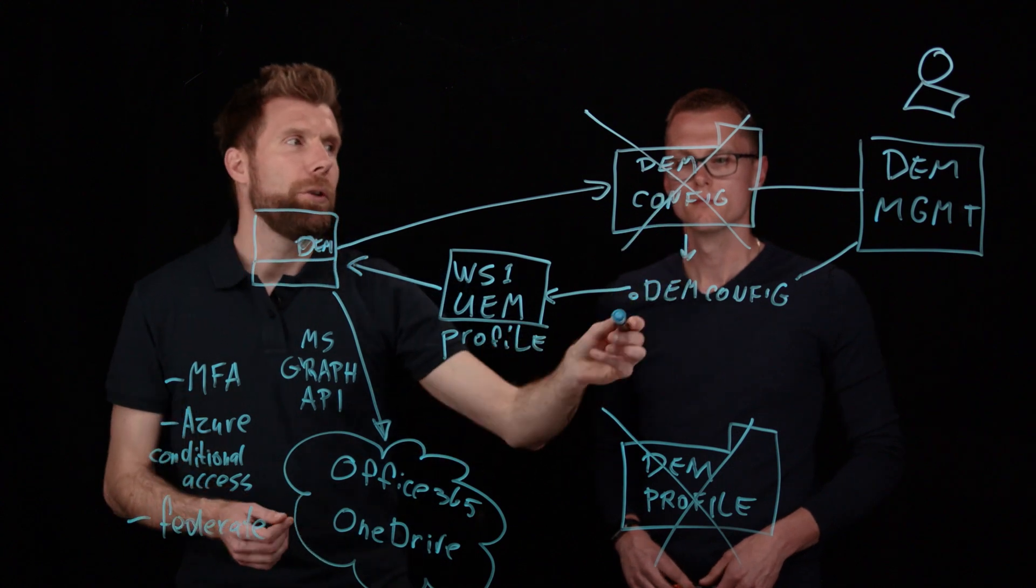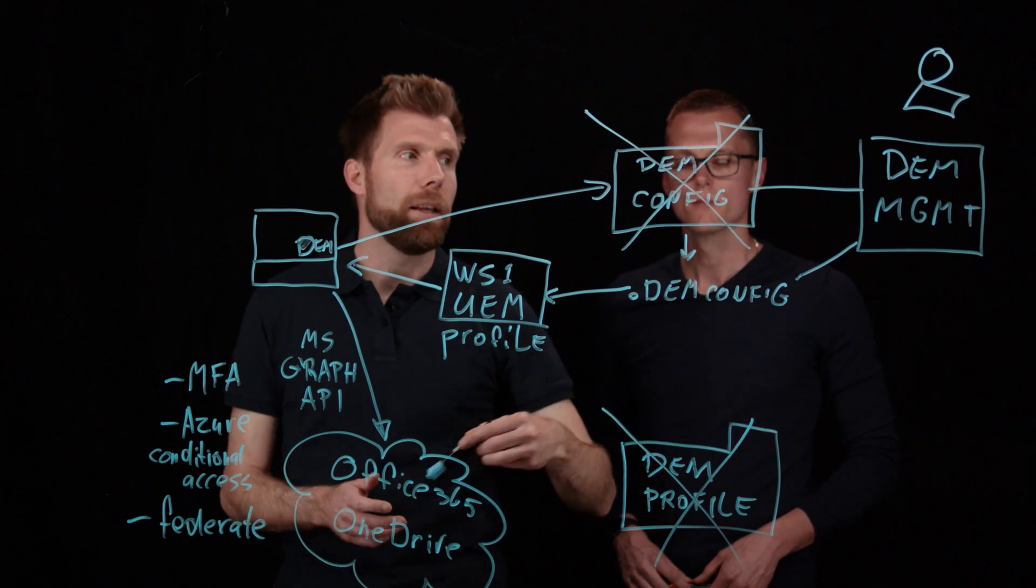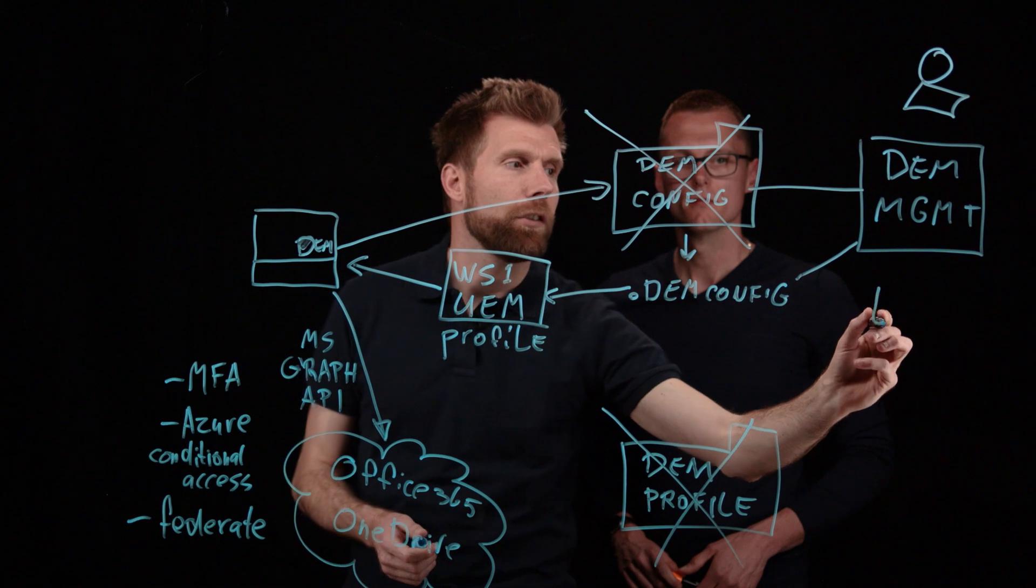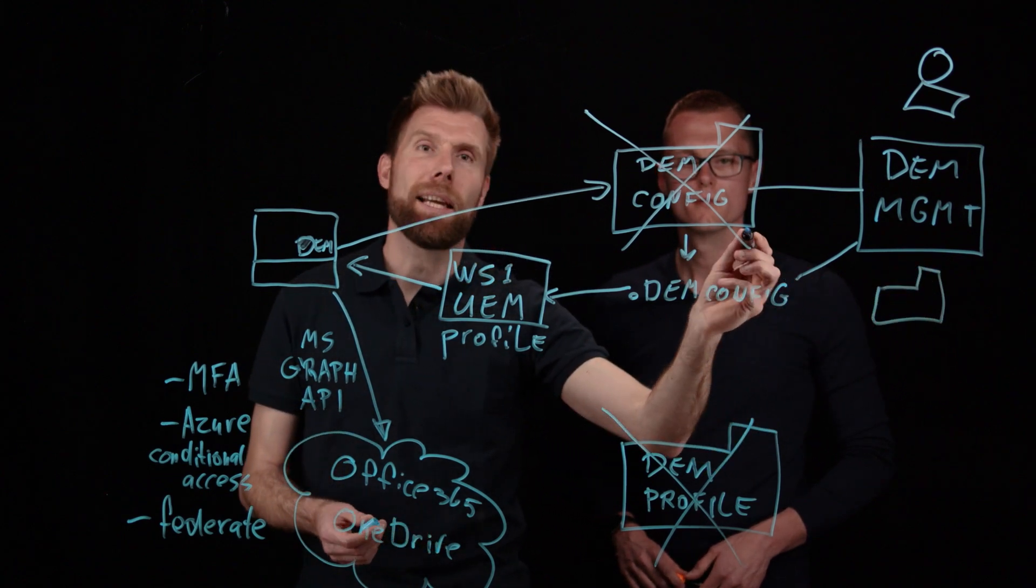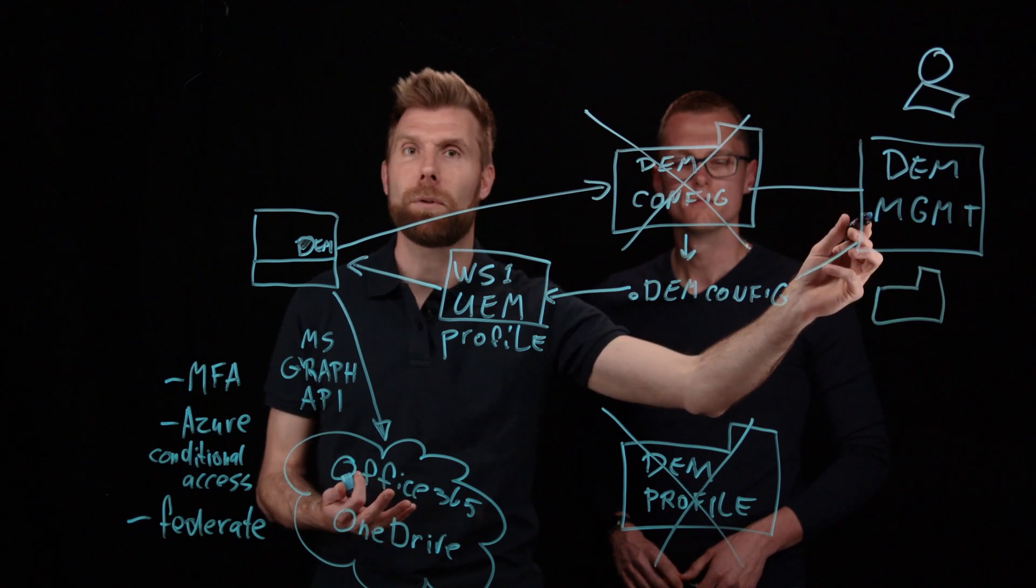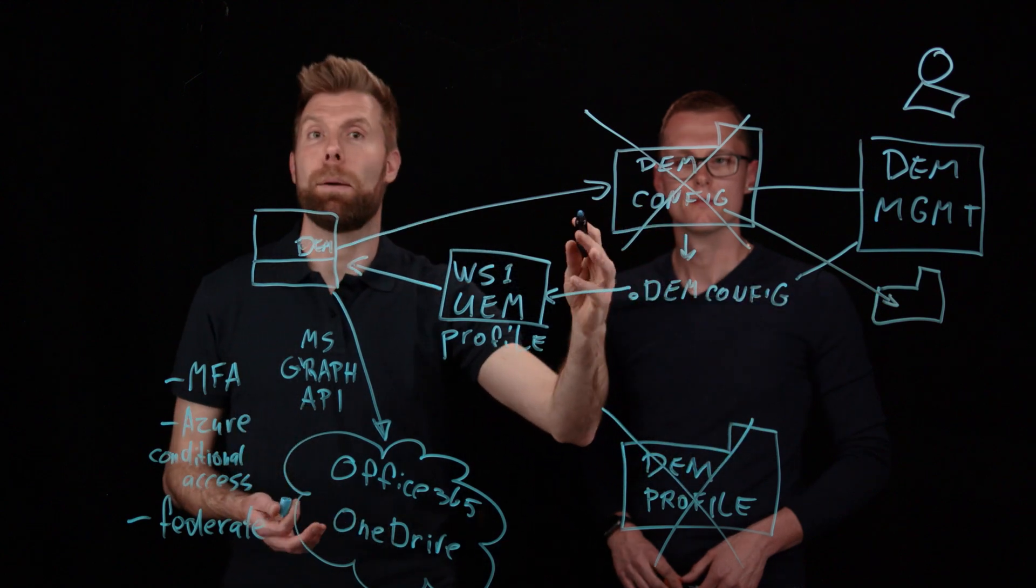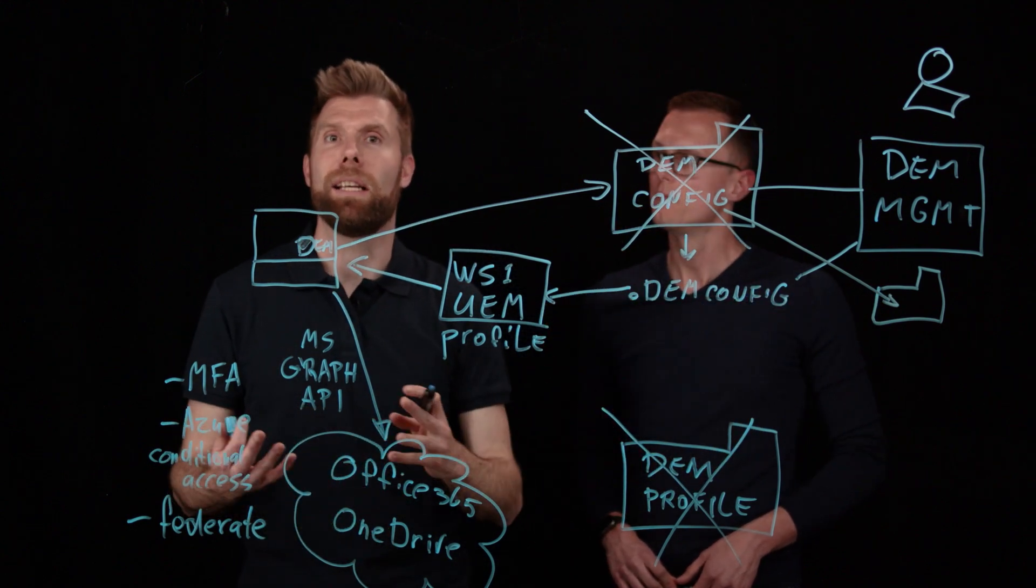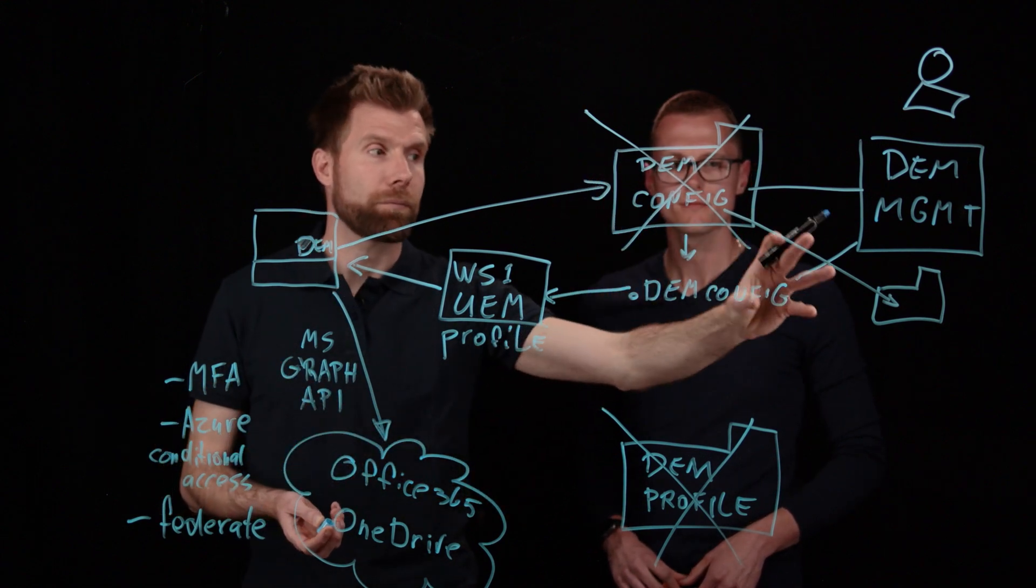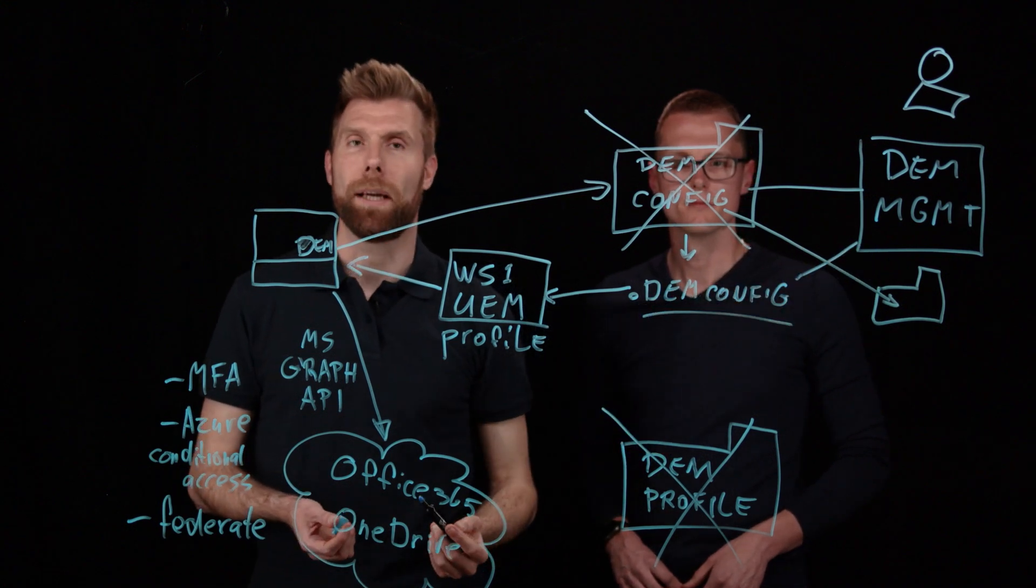Yeah, this DEM config file is basically a zipped compressed version of the DEM config share. What happens if you configure the DEM management console in Workspace ONE UEM integration mode is that it will no longer connect to the central share, but it will leverage a local temporary folder. So what you can very easily do is as soon as you've started this DEM management console, simply copy the content from your DEM config share towards this temporary folder and everything is there. So it's just a file copy to get your existing config into this new concept and then you can save it again in this DEM config format.